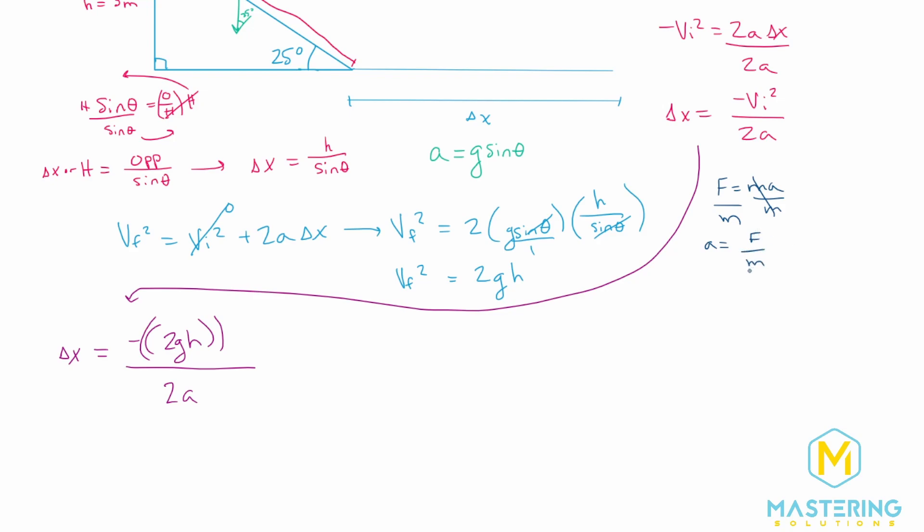And now the only thing acting on this, if we were to draw a free body diagram for the sled at this portion of the problem is kinetic friction.